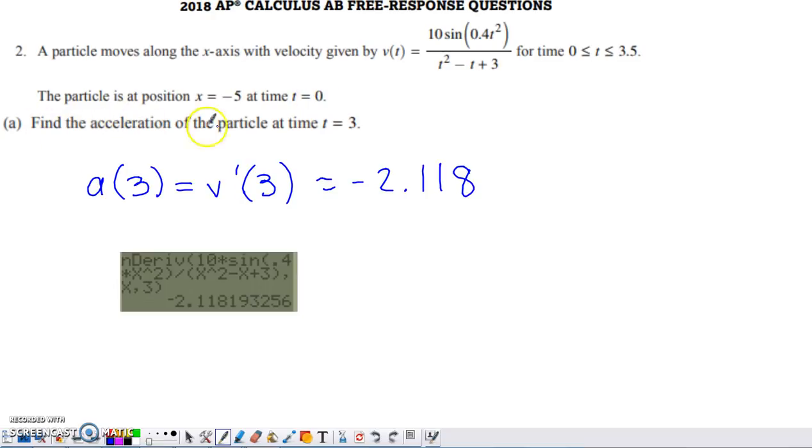Part A says find the acceleration of the particle at time t equals 3. So hopefully you recognize I need the acceleration at 3. I'm going to have to have the derivative of velocity. The rate of change of velocity is acceleration, and then I'm going to have to evaluate that derivative at 3.